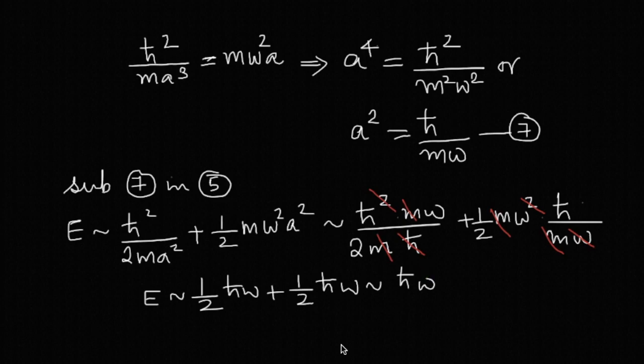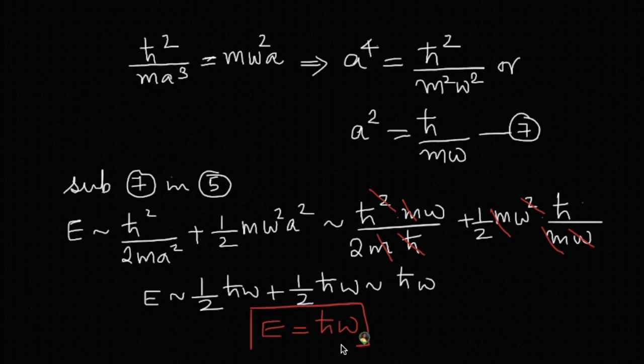Therefore, the total ground state energy of the harmonic oscillator is E = ℏω, obtained using the uncertainty principle. That concludes the derivation of the ground state energy of a harmonic oscillator using the uncertainty principle.